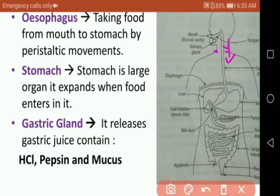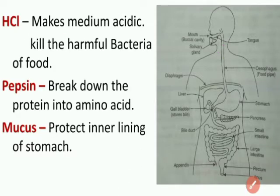One term here is gastric gland. The gastric gland releases gastric juice, which contains HCl, pepsin, and mucus. HCl makes the medium acidic, which kills harmful bacteria present in food. Pepsin breaks down protein into amino acids. Mucus protects the inner lining of our stomach from the effect of HCl acid.